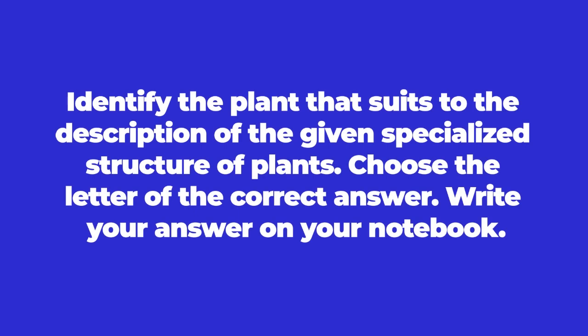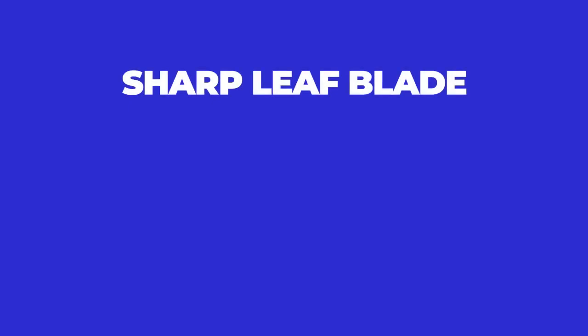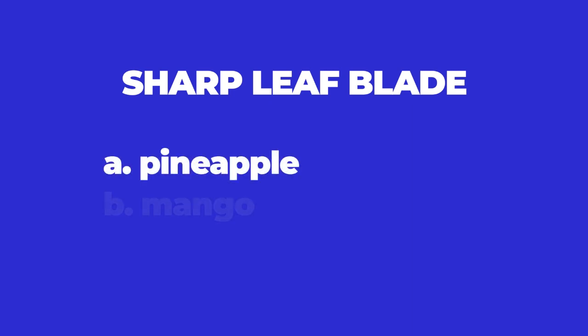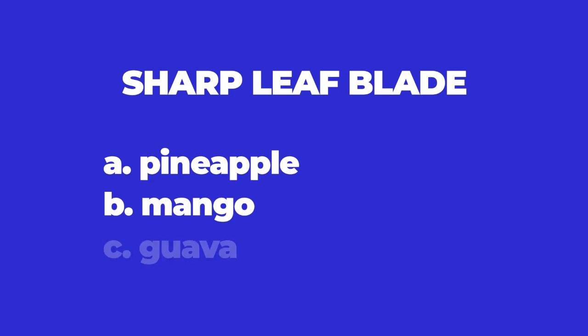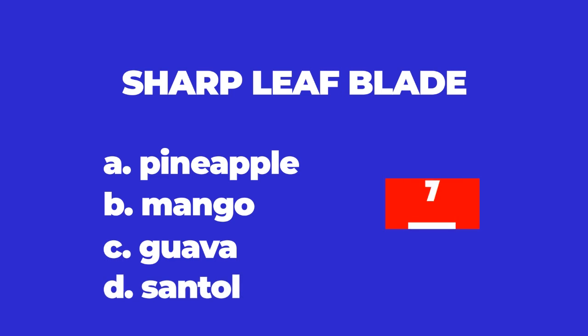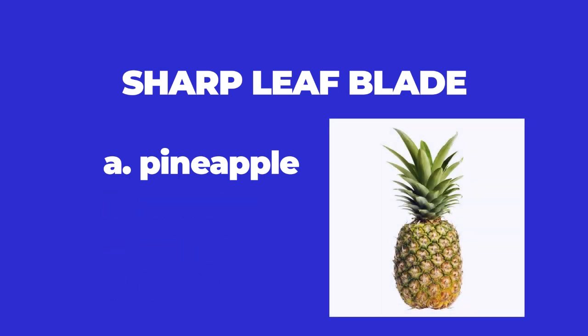Directions: Identify the plant that suits the description of the given specialized structure. Choose the letter of the correct answer and write your answer on your notebook. Number 1: Sharp leaf blade. A. Pineapple. B. Mango. C. Guava. D. Santol. The answer is A. You are right — pineapple has a sharp leaf blade.